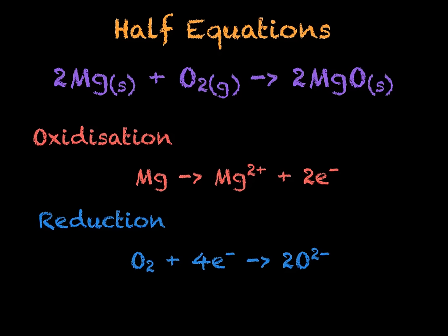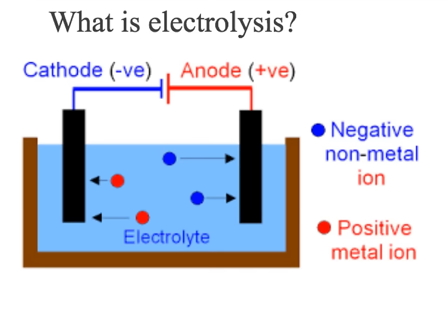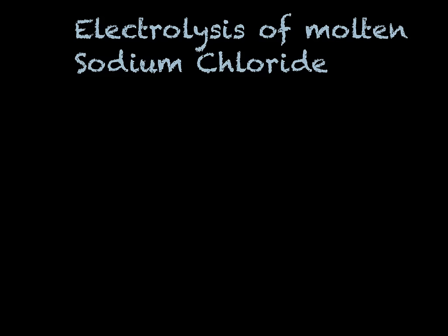We will now look at this in terms of electrolysis. For electrolysis to happen, we need our electrolyte made up of negative non-metal ions and positive metal ions. An example of this is the electrolysis of molten sodium chloride. When we carry out electrolysis of a molten metal salt, we will only have the products from the metal salt. For molten sodium chloride, we will have one type of cation and one type of anion. Our cation is going to be our positive metal ion — in this case, sodium. The cations are always positive metal ions or hydrogen. This means that chloride must be our anion, so we will have Na⁺ and Cl⁻.